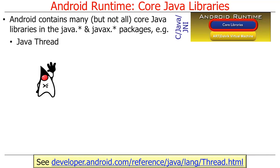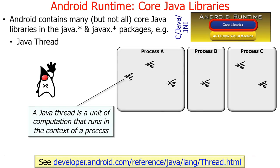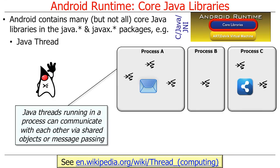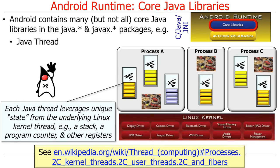One of the key classes provided as part of the core Java libraries in Android is the Java Thread class. A Java thread is a unit of computation that runs in the context of a process. Java threads running in a process can communicate with each other via shared objects or message passing. Each Java thread leverages some unique state from the underlying Linux kernel thread used to execute it. This unique state includes things like a runtime stack to keep track of method and function calls, a program counter, and other registers.